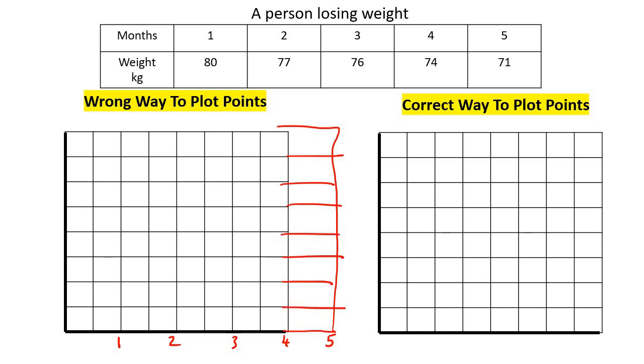Now, this would be months. Remember we've learned in the previous lesson that this is your independent variable, which always goes on the x-axis. And then this one at the bottom is always the dependent, and that goes over here. Now, the smallest value is 71 and the largest value is 80. So for example, we could go 10, 20, 30, 40, 50, 60, 70, and 80.